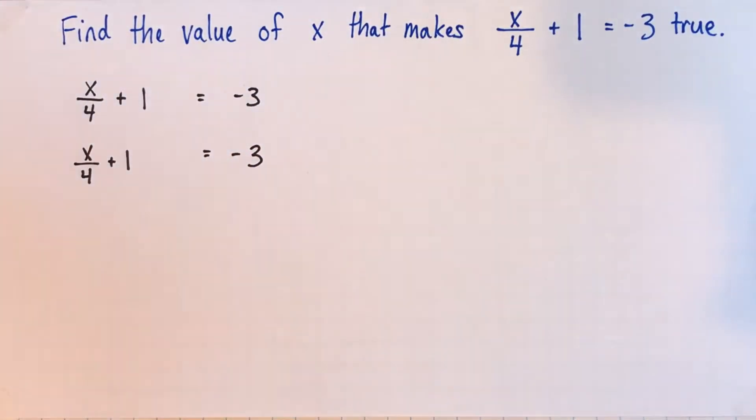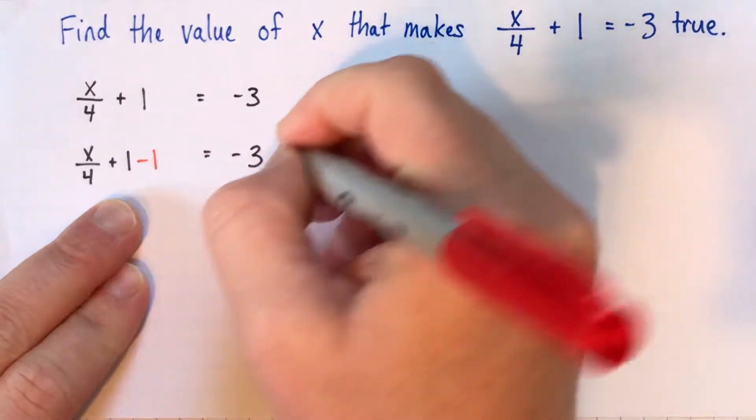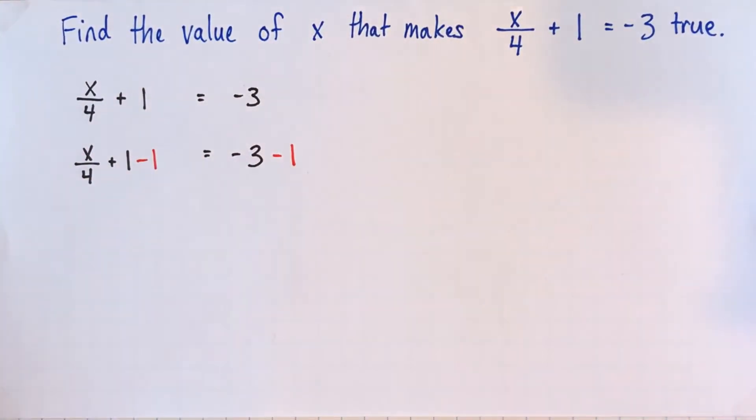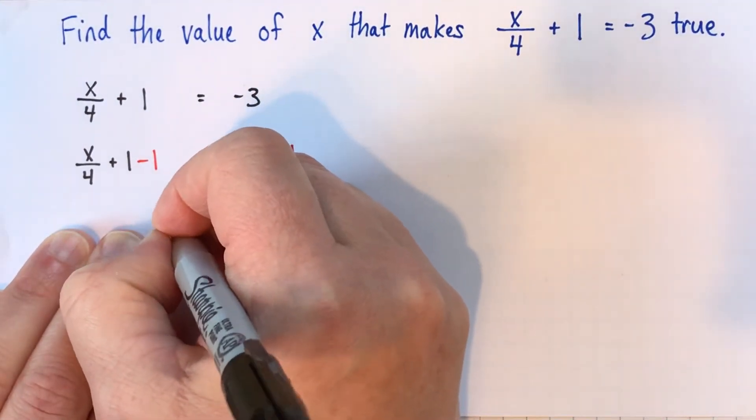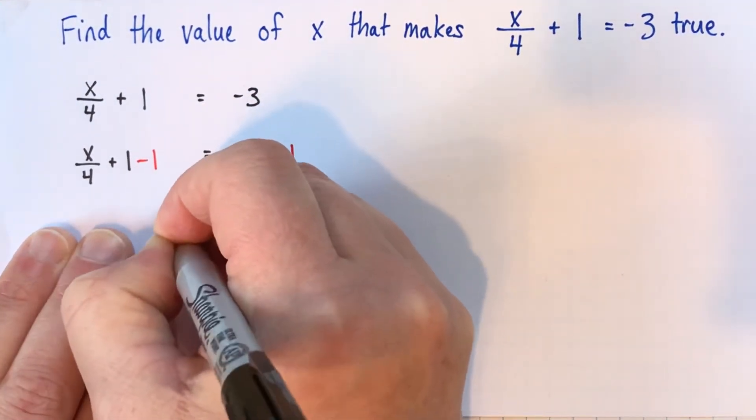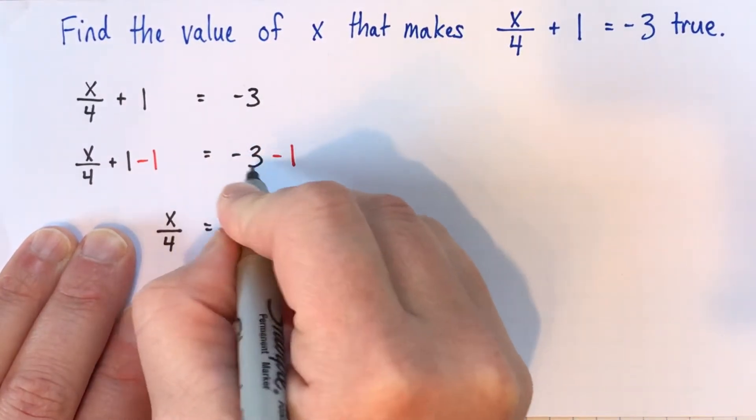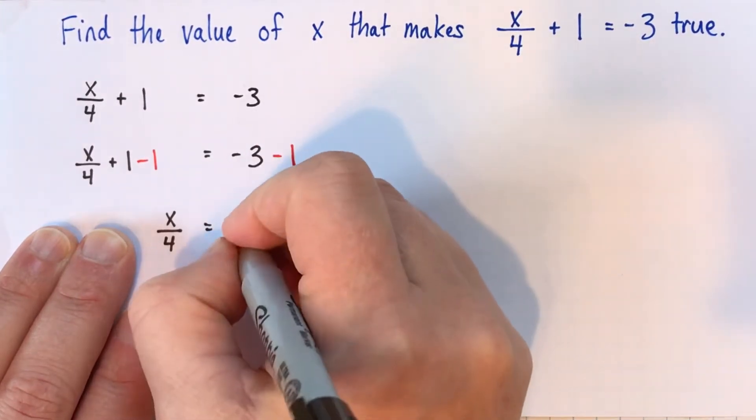So I've just copied the equation again. And what I'm going to do is I'm going to subtract 1 from both sides. Because if you add 1 and then you take it away, that's like you didn't add it at all. So we'll subtract 1 from both sides. And that will give us just x divided by 4 on the left. That was the point of doing that. We'll think carefully here with negatives. If we have negative 3 and we take another one away, we'll go down one more to negative 4.